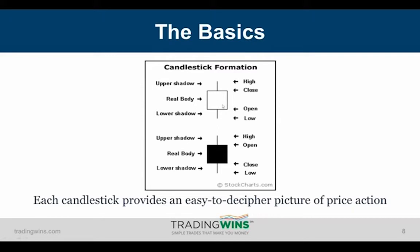The way you read a bullish candle: you open at the lower edge, at some point go as high as the top wick and as low as the bottom wick, then close up at the upper edge of the body. On that candle, we can say the buyers won this tug of war. Every single candle is a tug of war between buyers and sellers. The length of the body and the range from high to low are all factors we take into consideration — how tough was the battle, who won it, and by how much.